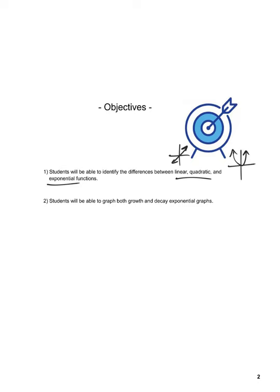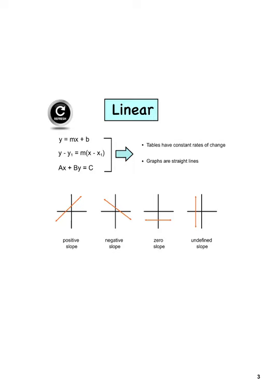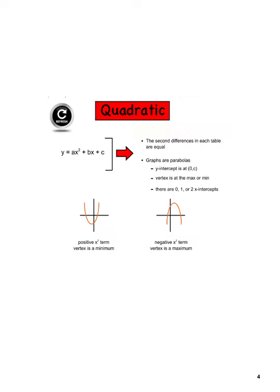So again, when we talked about linear, we had these three different forms of equations: point-slope, slope-intercept, standard. We had positive slopes, negative slopes, zero slopes, and infinite slopes — something you've been doing probably the longest in your algebra experiences. Then we had the quadratic, which we've obviously spent a lot of time on this year, which is of the form ax² + bx + c, looking at x-intercepts, y-intercepts, where the vertex is, and what the end behavior is.